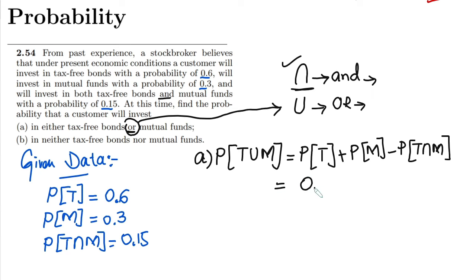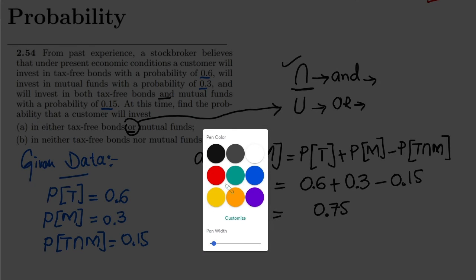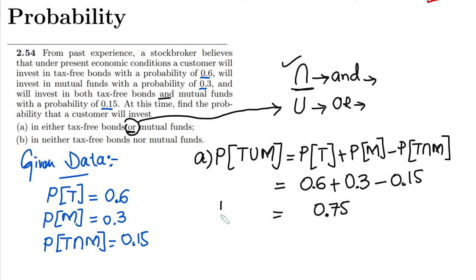Substituting the values: probability of T is 0.6, probability of M is 0.3, and probability of T intersection M is 0.15. So we get 0.6 plus 0.3 minus 0.15, which equals 0.75. That is the answer to part A: the probability of T union M is 0.75.